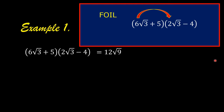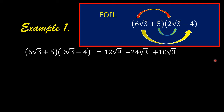Then the outer terms: 6 square root of 3 times negative 4 is negative 24 square root of 3. Then the inner terms: positive 5 times 2 square root of 3 is 10 square root of 3. Then the last terms: positive 5 times negative 4 is negative 20.